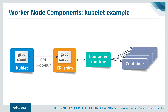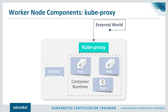The third component of the worker node is kube-proxy. Kube-proxy is the network proxy which runs on each worker node and listens to the API server for each service endpoint creation or deletion. For each service endpoint, kube-proxy sets the routes so that it can be reached.